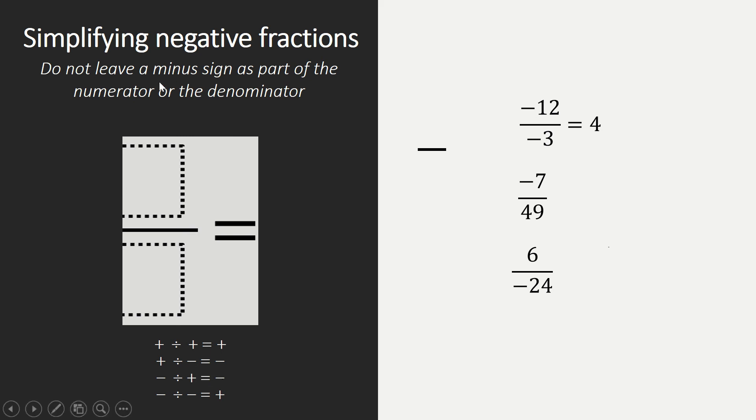However, we are not allowed to leave a minus sign as part of our numerator or denominator. So what you do is place a minus sign in front of your fraction line. This is really important and you must make sure that you always do this. We divide the numerator by 7 and the denominator by 7, and our answer is minus 1 over 7.